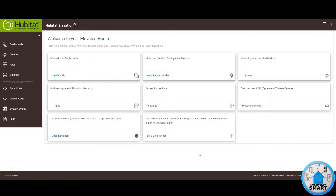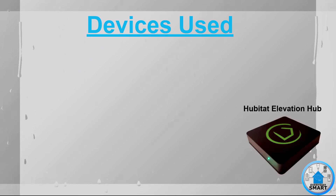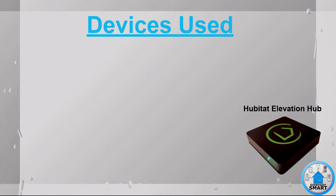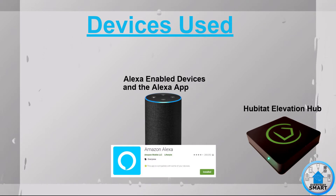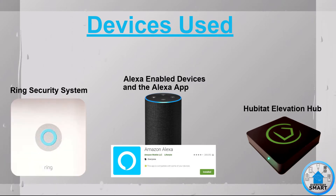Before we get into the rule, let's discuss what we're going to need for this to work. The first thing you're going to need is the Hubitat Elevation Hub. This is what will allow the rules and the different automations to be executed. You're also going to need Amazon Echo devices or Alexa-enabled devices, the Amazon Alexa app — that's where you'll be creating some of the rules — and of course the Ring Alarm system.